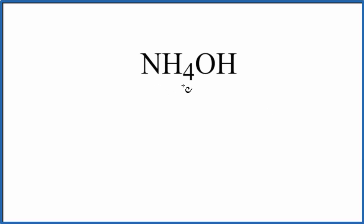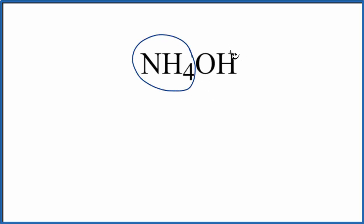To write the name for NH4OH, we have to first recognize that we have two polyatomic ions. We have NH4 here, the ammonium ion, and then we have OH, that's the hydroxide ion.